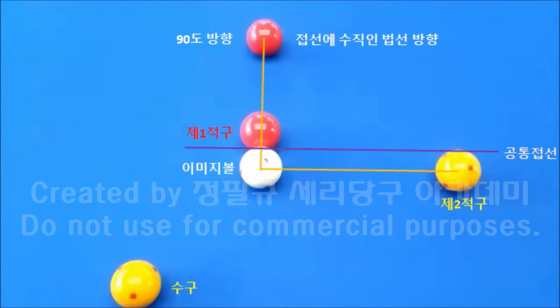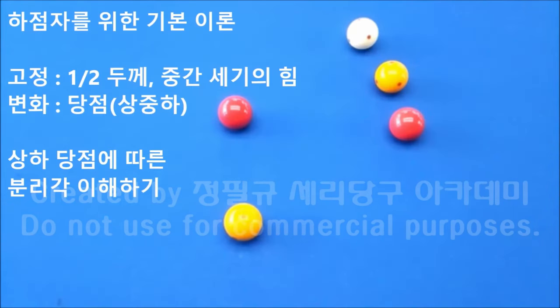지금까지 이미지볼의 중심을 겨냥하는 분리각 공략법을 알아보았습니다. 분리각 원리를 이용하면 가장 얇은 두께로부터 끌어치기나 밀어치기가 아닌 둔각 지역의 공을 쉽게 다룰 수 있습니다. 분리각 이론은 상급자에게 필수적인 이론입니다. 수구의 진행방향에서 흰 공은 45도, 빨간 공은 90도로 분리되고, 그 중간은 노란 공이 됩니다.